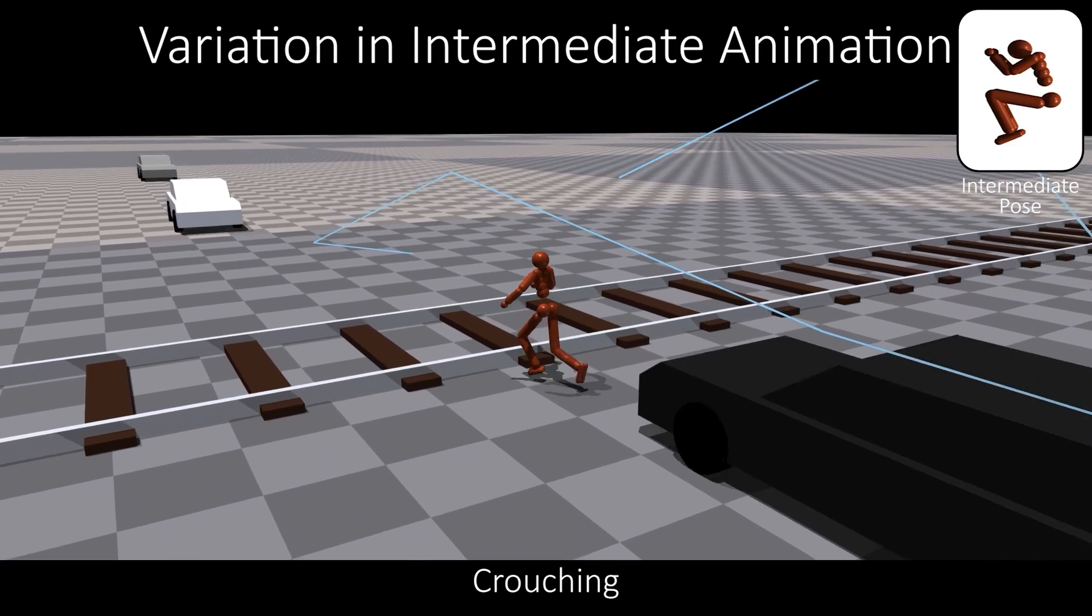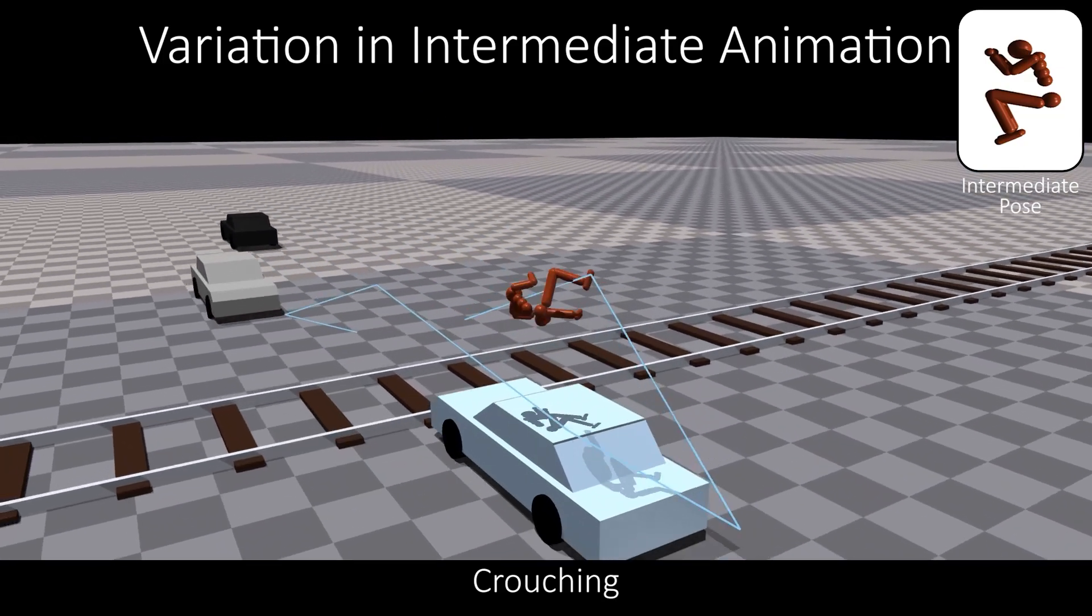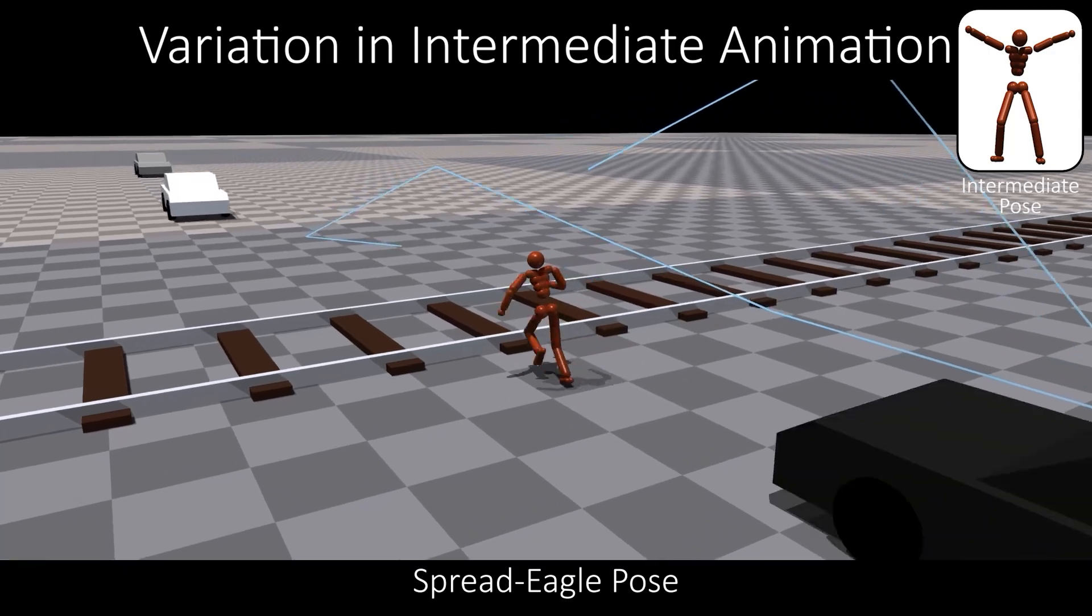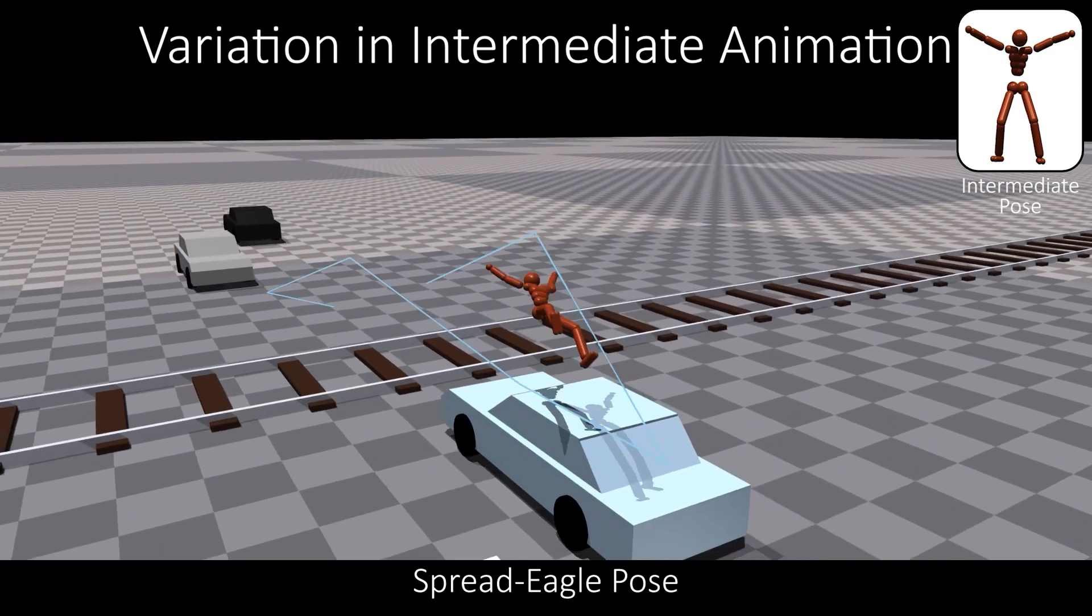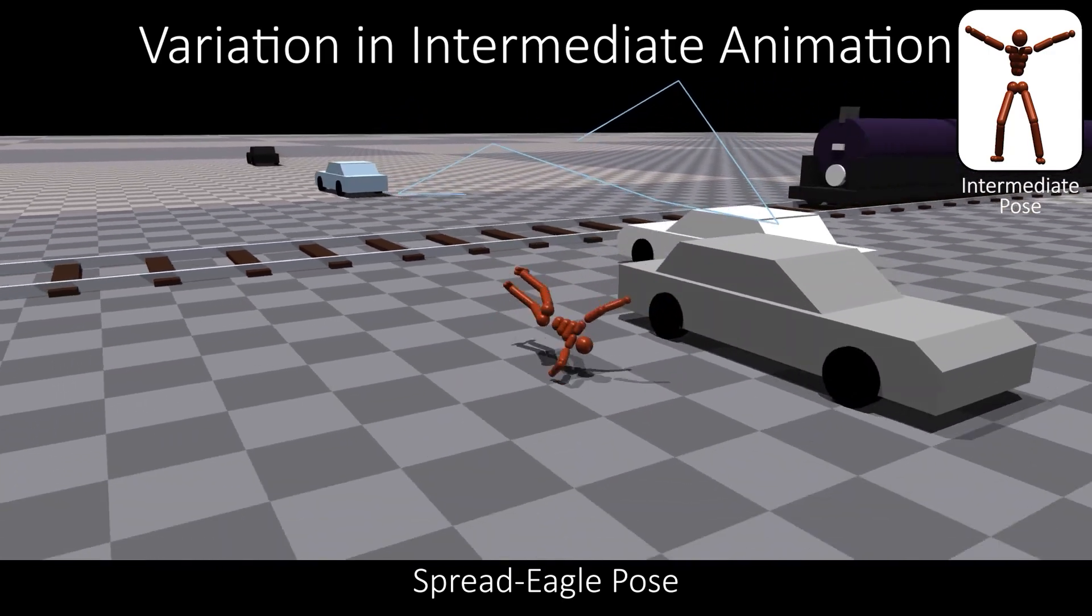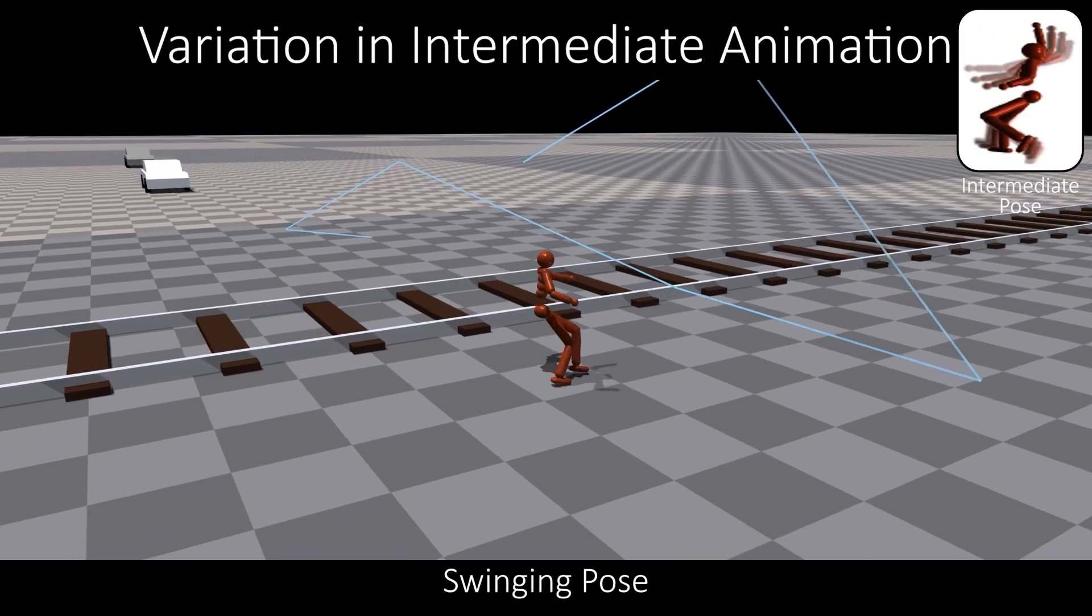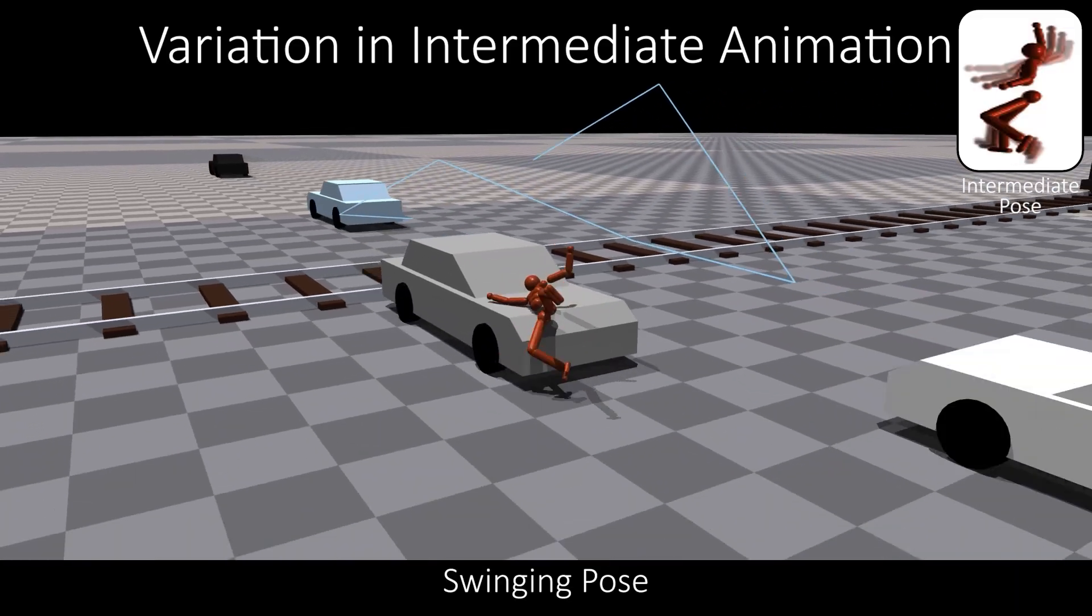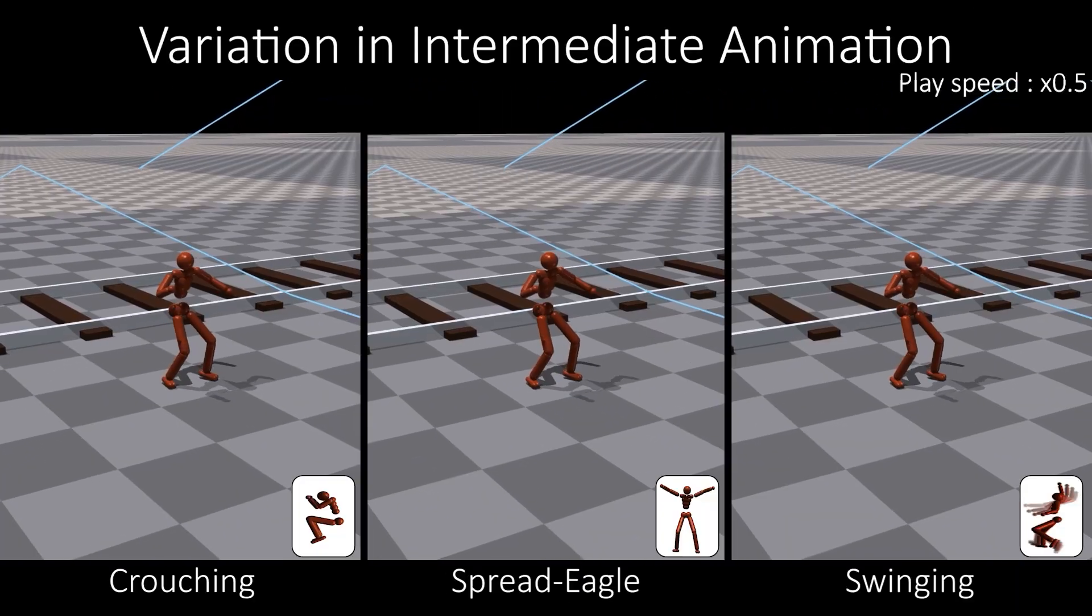In our system, task control and pose control are disentangled, which allows users to freely adjust the intermediate poses. This demonstration utilizes three intermediate poses: crouching, a spread eagle pose, and a swinging pose. These poses allowed us to seamlessly achieve a wide range of stunt action styles as shown.